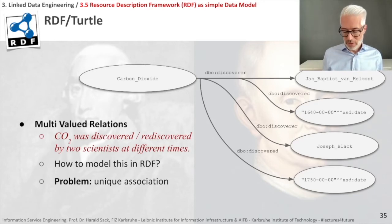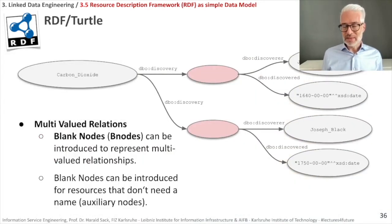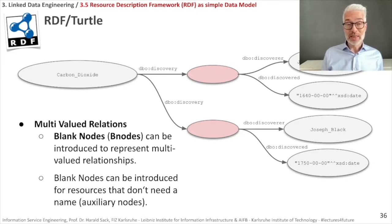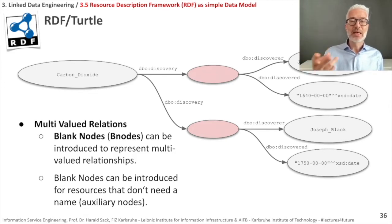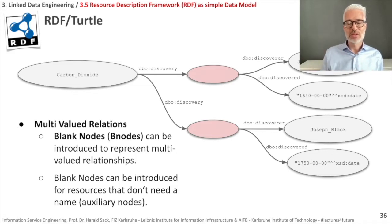To solve this grouping problem, blank nodes have been introduced. Instead of direct triples, we say carbon dioxide has a discovery, and each discovery has a discoverer and a discovery date. This allows us to correctly group: Jan Baptist van Helmont discovered CO₂ in 1640, and Joseph Black rediscovered it in 1750.